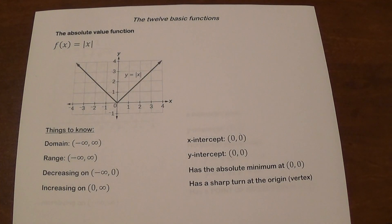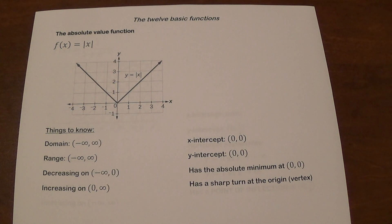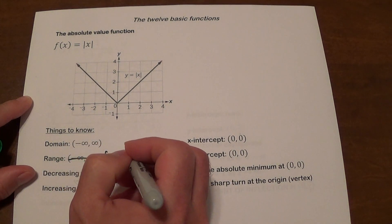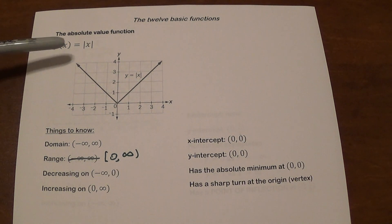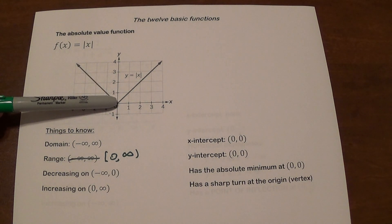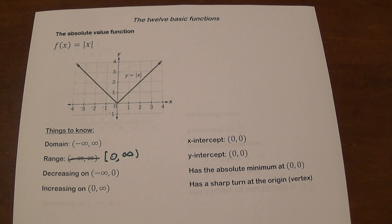The absolute value function, f of x equals absolute value of x. Whatever x is, you take the absolute value, so you get 0 or above — the graph looks like a V-shape. The domain is all real numbers, and the range is from 0 to infinity. From negative infinity to 0 the graph is decreasing, and from 0 to infinity it is increasing. It has its x-intercept and y-intercept at the origin, an absolute minimum at (0, 0), and a sharp turn at the origin called the vertex.